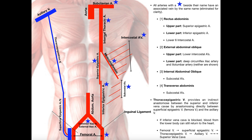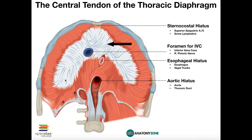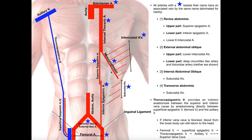The second branch of the internal thoracic artery is called the superior epigastric artery. One important thing to note about this artery is it does cross through the diaphragm. The superior epigastric artery and the vein that goes with it are actually going to cross through the diaphragm at a structure called the sternocostal hiatus, and once they cross that, they will actually be in the abdominal cavity.